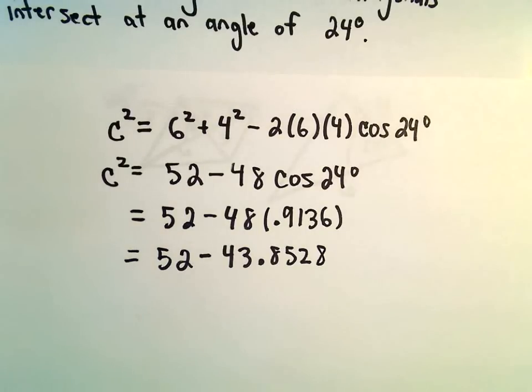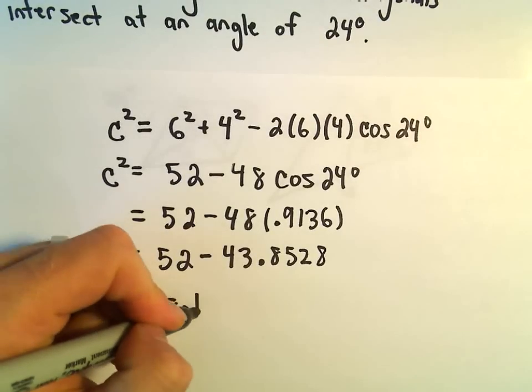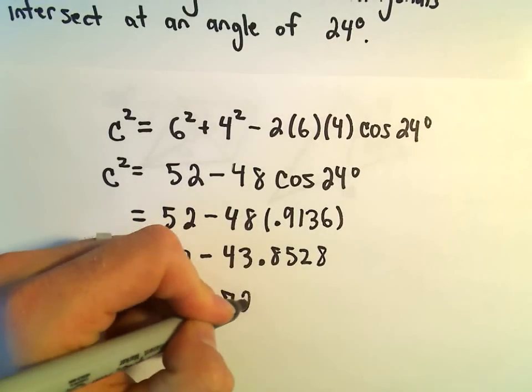And now, if we just subtract, 52 minus 43.8528, I'm getting that to equal 8.14720.